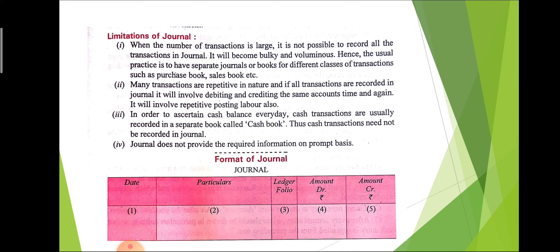Journal does not provide the required information on a prompt basis. The format of journal includes the following columns: date, particulars, ledger folio (LF), and two amount columns — one for the debit side and one for the credit side.